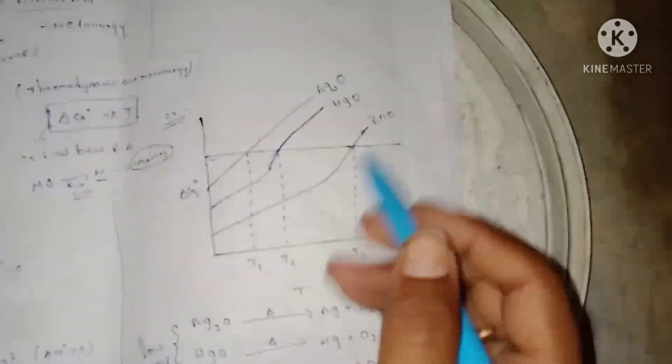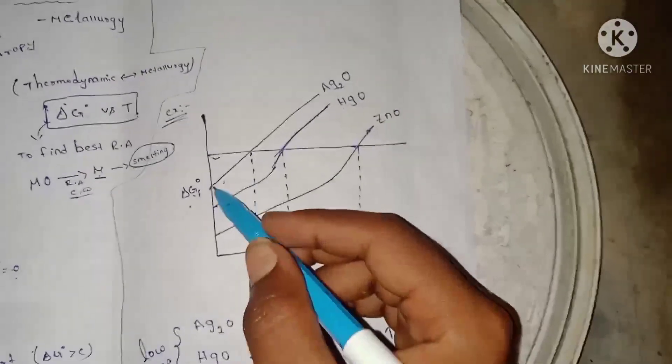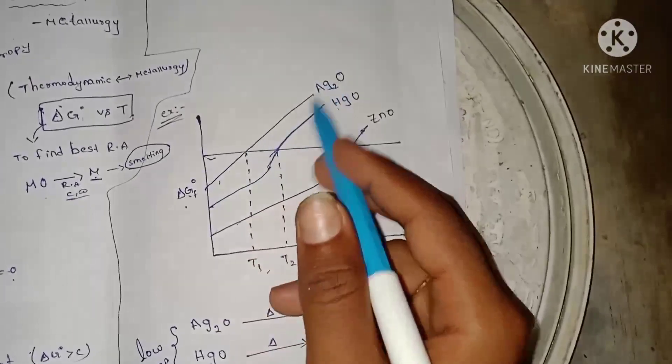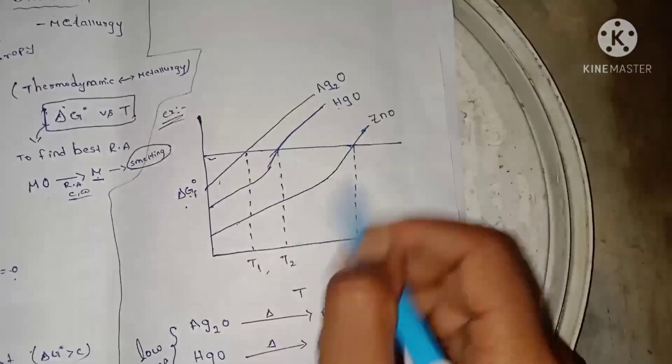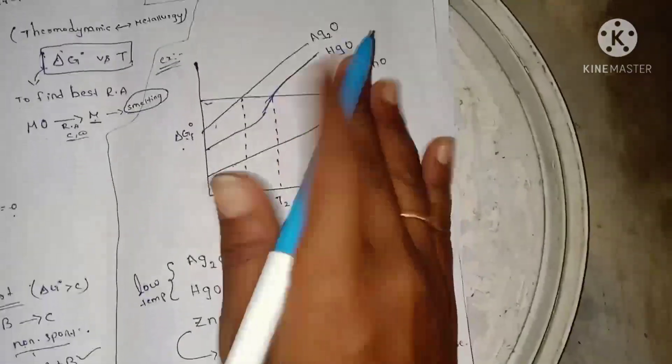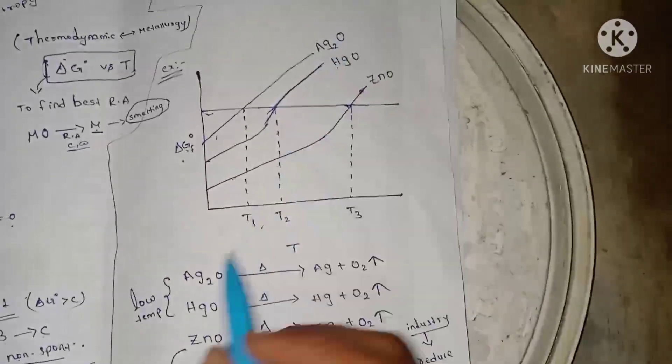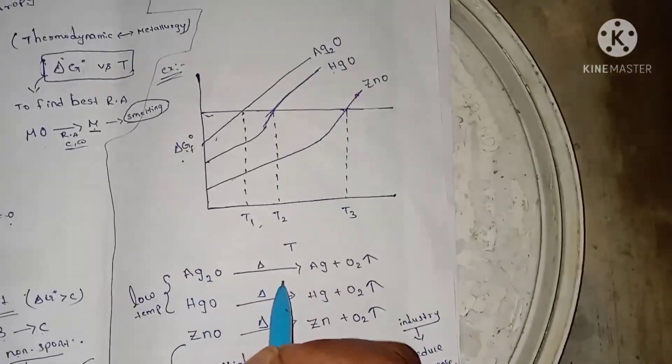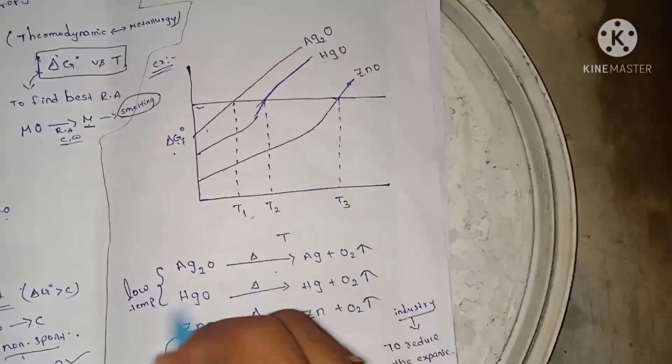Now, we have metal oxides. We will try to reduce this metal oxide.